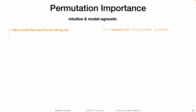The first step is that we take a model that was fit to the training set. We can take any machine learning model or algorithm. As an example, consider we are using a random forest classifier and then we fit the random forest to the training set. We just train a model on the dataset — nothing really special about this step.